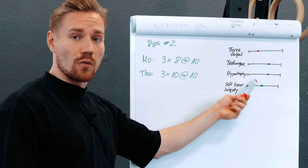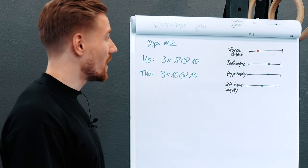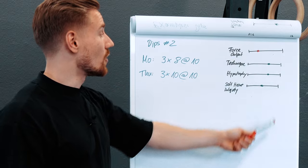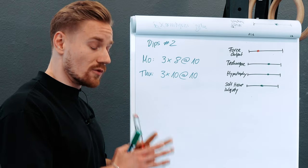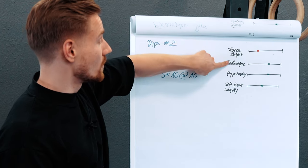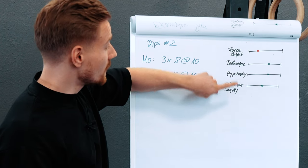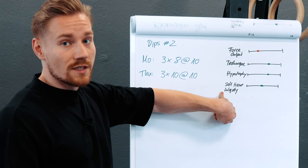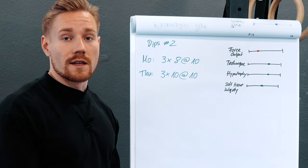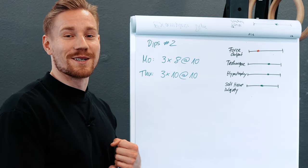Looking at that second example, technique, hypertrophy, and soft tissue integrity work pretty well together in this plan — but our actual goal of increasing force output works very, very poorly. We need to find a way to organize all of these SRA curves so they work together over a sufficient period of time — improving force output and technique, while building or at least maintaining muscle and not destroying soft tissue integrity. And at this point I'm going to disappoint you: that's what we're going to cover in the next video.